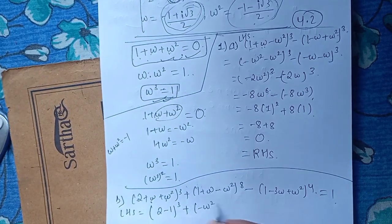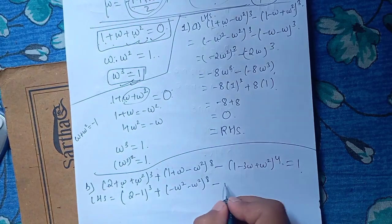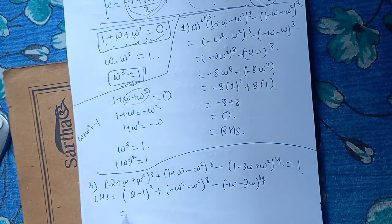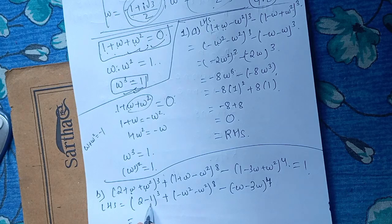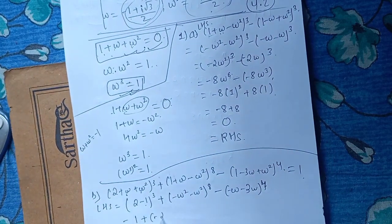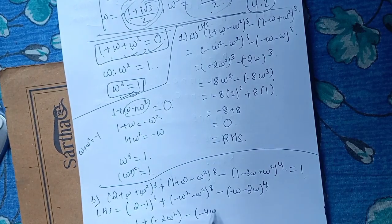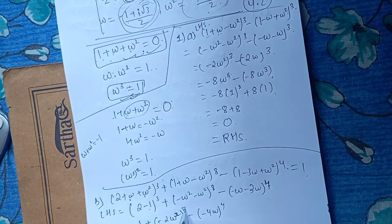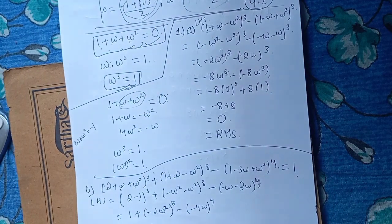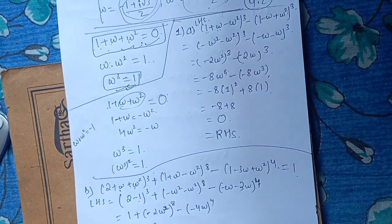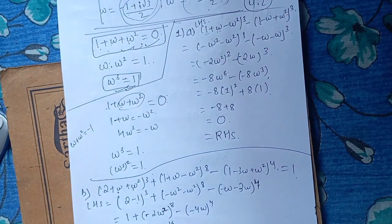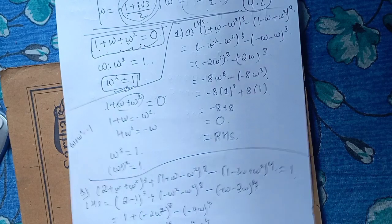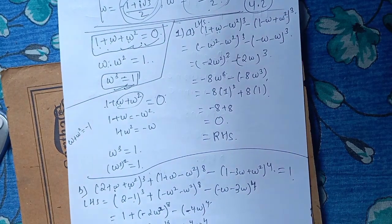One plus omega square minus omega square. The LHS is minus one square. What is the difference between 2 and omega square squared? One square square is minus one square square. The LHS is minus minus one square, and minus 1 is minus 4 omega to the power 4. 2 is 8 into omega to the power 16.